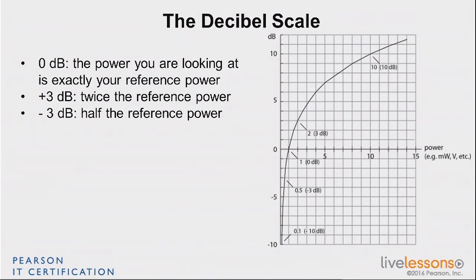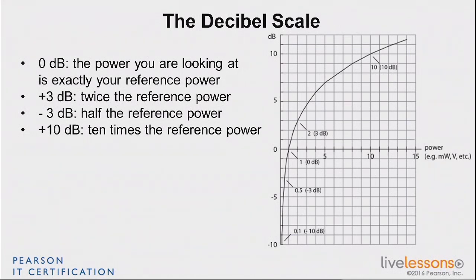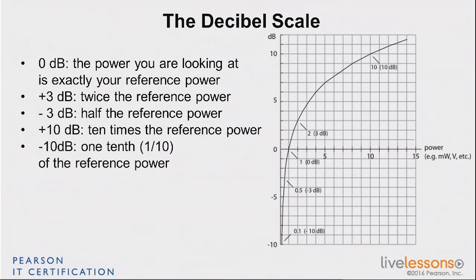The rule of 10s: every time you multiply by 10, you add 10dB. So if you inject 1 milliwatt and have 10 milliwatts on the other side, you've added 10dBm. Likewise, if you divide by 10, you lose 10dB. Times 10 is +10dB; divide by 10 is −10dB. Times 2 is +3dB; divide by 2 is −3dB.